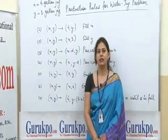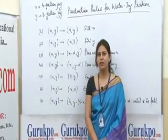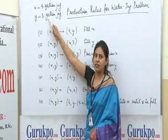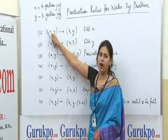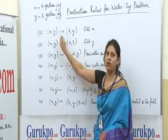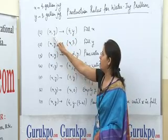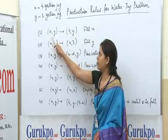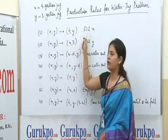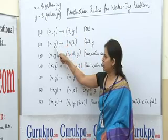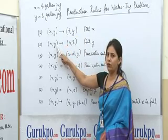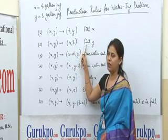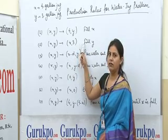Now we can see these are the production rules to solve the water jug problem. In rule 1, taking the 4 gallon jug as the X jug and taking 3 gallon jug as the Y jug, we can see how we can change the state of XY. We can fill the X jug by 4 gallons of water. This rule can be stated as XY is converted into 4Y by filling the 4 gallon jug. The second rule states that we can convert XY into X3, meaning we can fill the 3 gallon jug to its 3 gallon capacity.